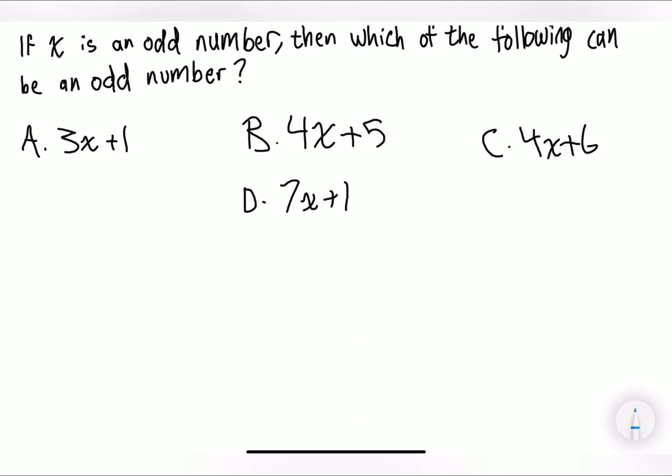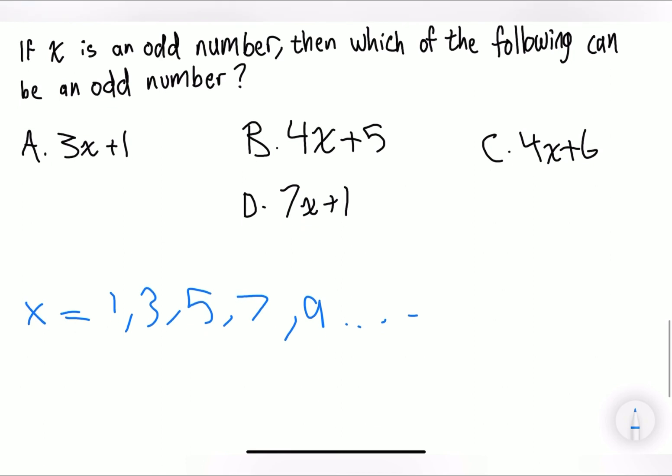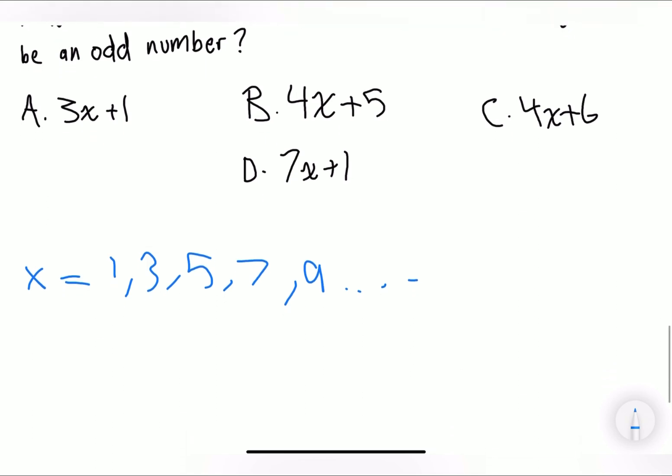The question is asking, if x is an odd number, so if x is equivalent to an odd number, which is 1, 3, 5, 7, 9, and etc. If x is equivalent to an odd number, then which of the following can be an odd number? Okay. So it's a matter of just plugging things in algebraically. We can just solve this.